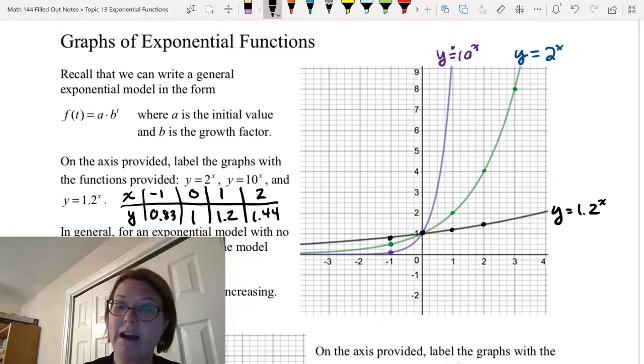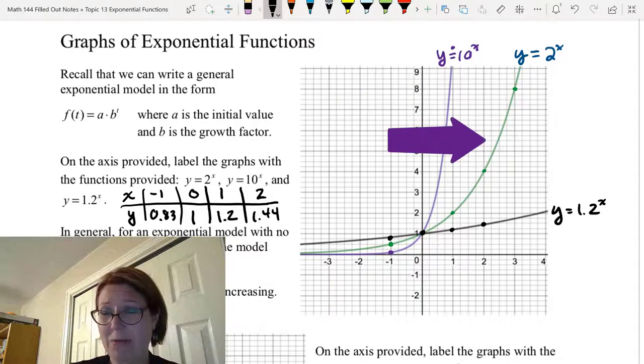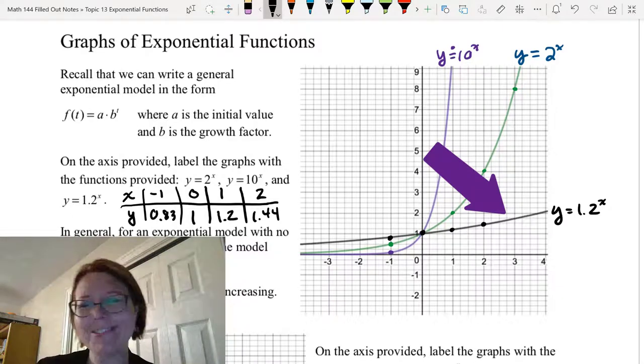So all of the graphs increase across the whole domain. Y equals 10 to the x increases the fastest. Y equals 2 to the x increases the next fastest. And y equals 1.2 to the x, it's a pretty slow increase. It's not quite horizontal, but it's close.